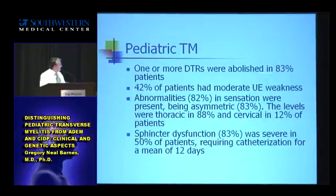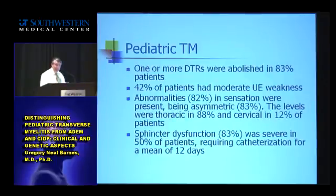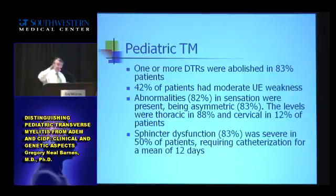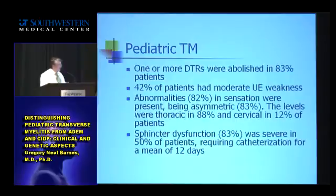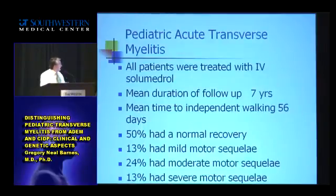One thing to point out about pediatric transverse myelitis is that it's quite a bit of a misnomer. If you look on the pediatric MRI for TM, you see asymmetric white lesions or inflammations up and down the spinal cord — it's really not concentrated in any one particular region. That's pretty characteristic and a little different from what you see in adults. And of course, we've heard about the treatment and outcome.